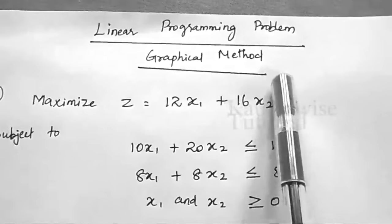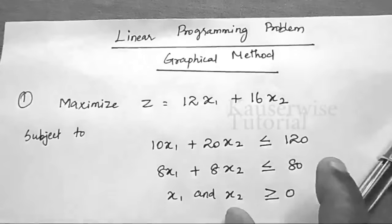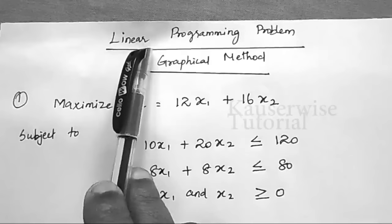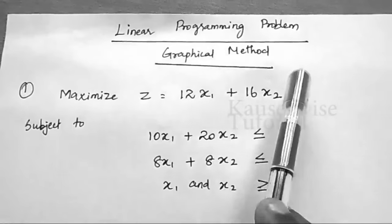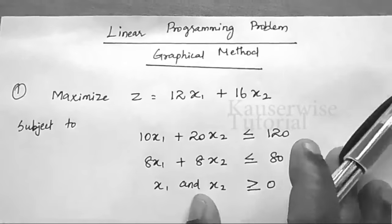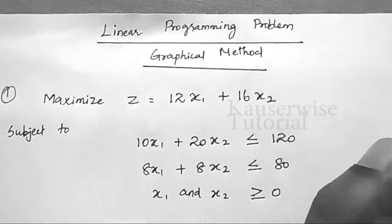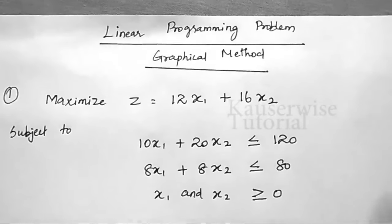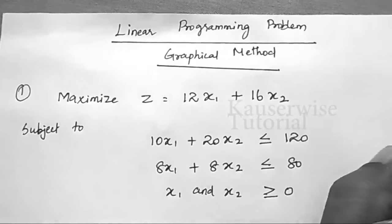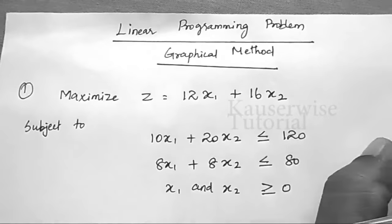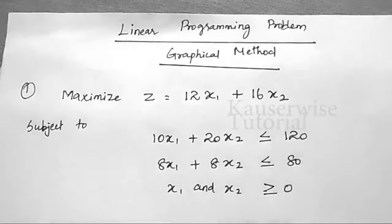In this video, I am going to explain a linear programming problem using the graphical method. Before we go to the problem, let me explain the basic concept. LP, that is linear programming, is a mathematical programming technique to optimize performance. Generally in an organization, there are two major objectives: minimization of total cost of production, and maximization of profit.